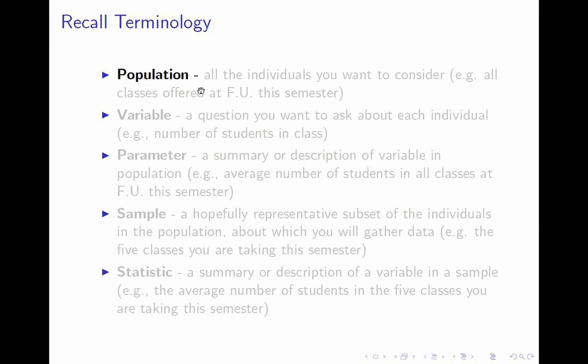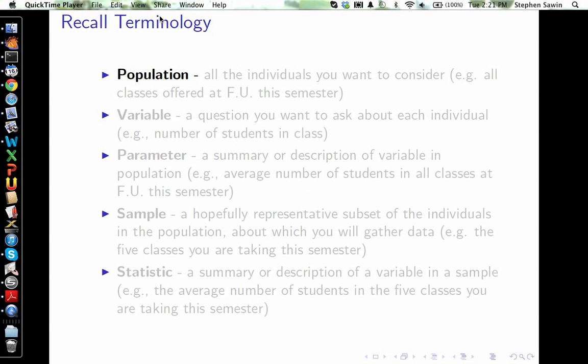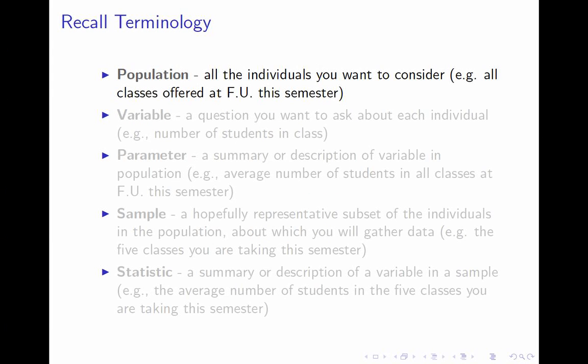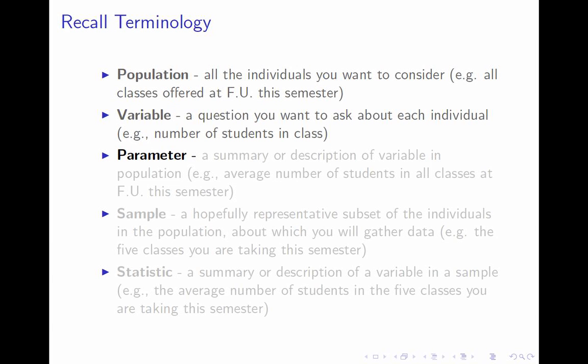We say that a population is all the individuals you would like to consider. For example, you might be interested in all the classes offered at Fairfield University this semester. The variable is a question you want to ask about each individual — maybe the number of students in class. The parameter is a summary or description of the variable in the population, so a natural parameter would be the average number of students in all classes at Fairfield University this semester.